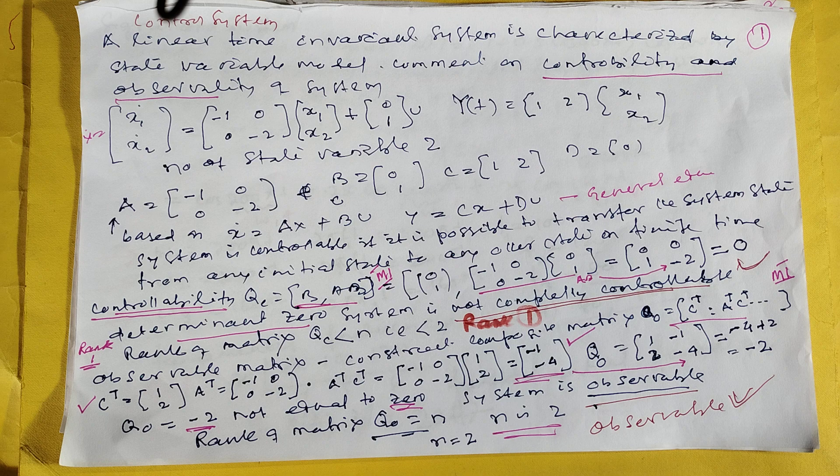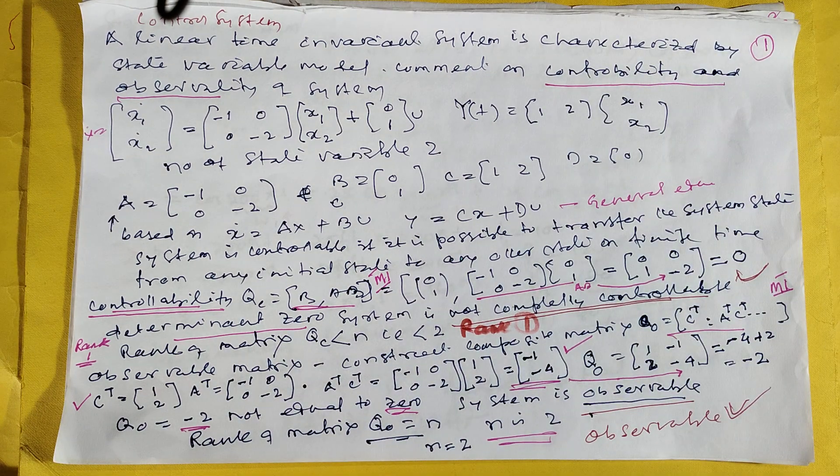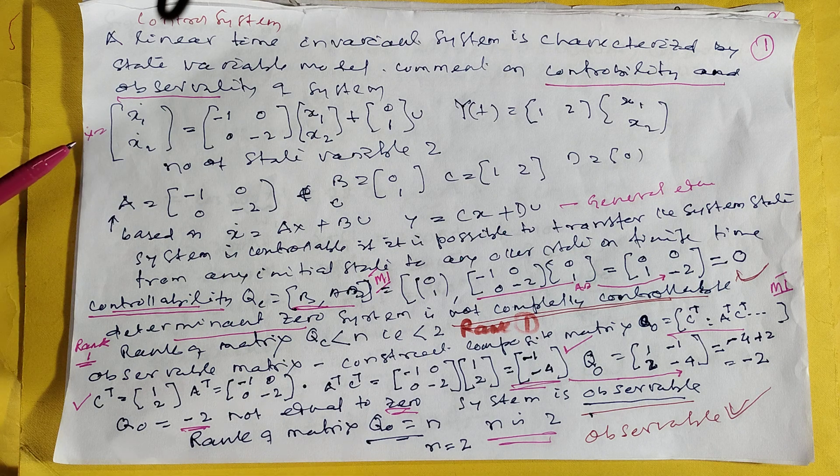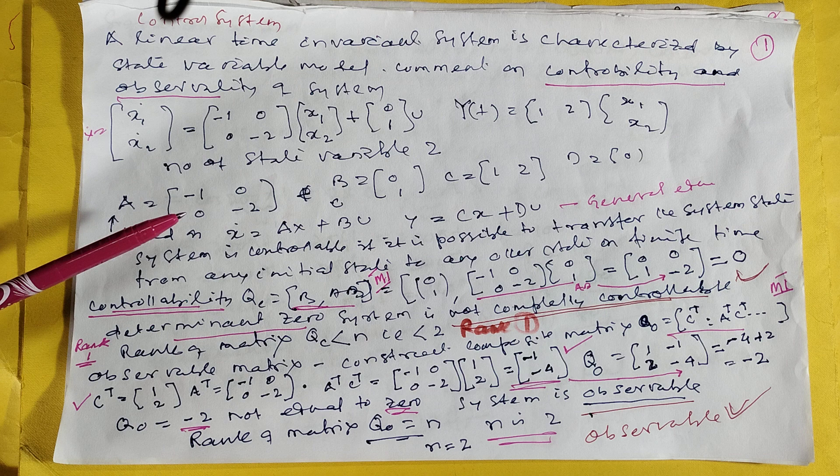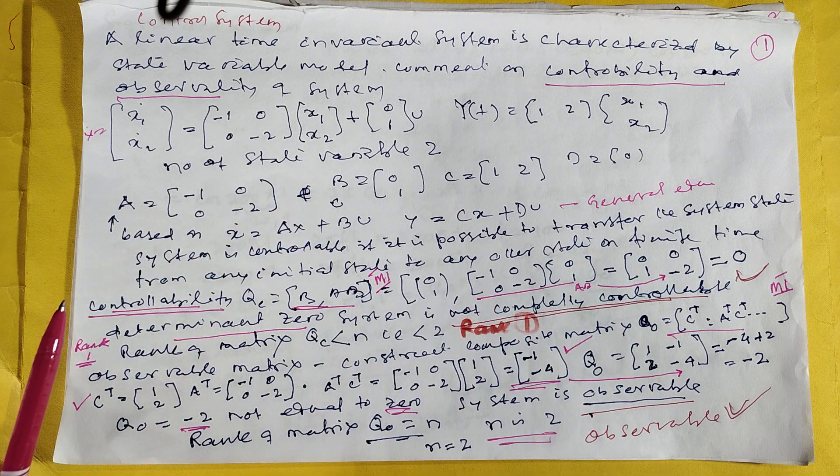The first problem on control engineering. Here, a linear time invariant system is there. You have to find the controllability and observability. This is the standard formula: X dot equals AX plus BU, Y equals CX plus DU. For controllability, it is B into AB.